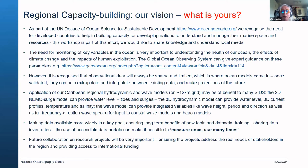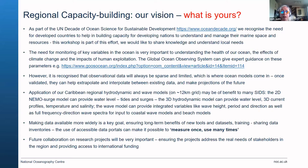The need for monitoring of key variables in the ocean is important to understanding the health of our ocean, the effects of climate change, and the impacts of human exploitation. The global ocean observing system can give expert guidance on these parameters and how to measure them. However, observational data will always be sparse and limited, which is where ocean models come in. Once validated, they can help extrapolate and interpolate between existing data and make projections of the future.